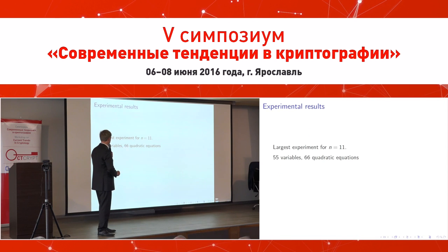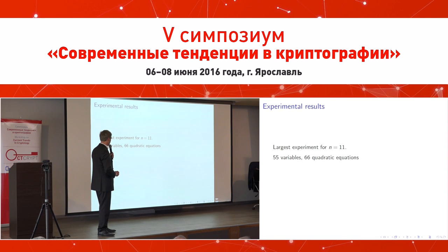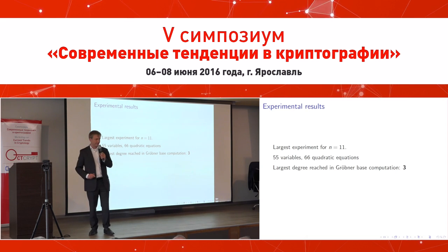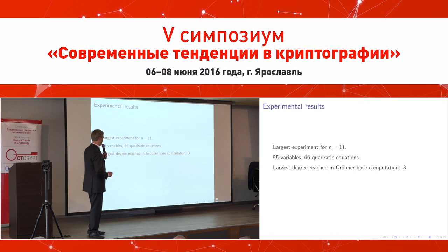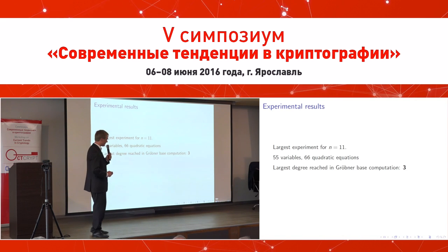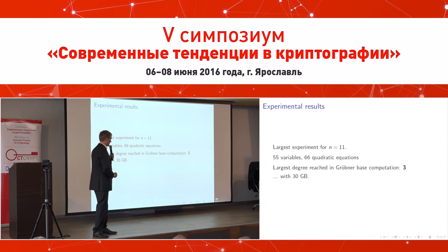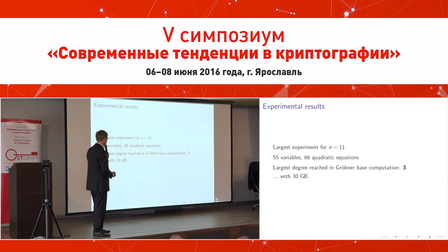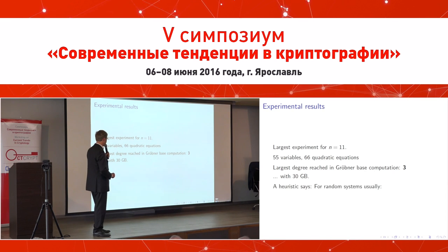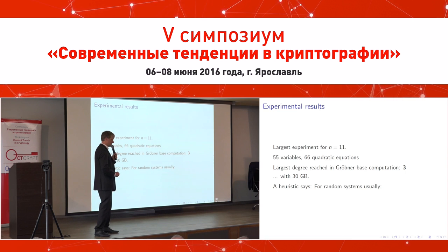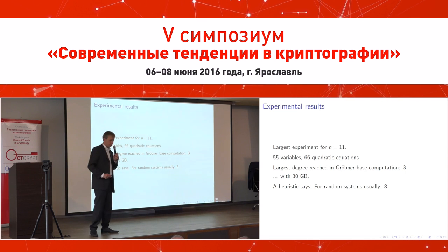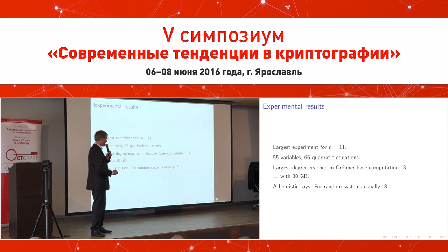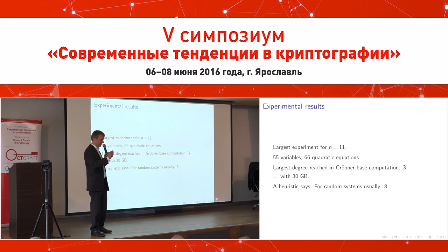I ran experiments. The largest experiment I could do was for n=11, and the largest degree reached was 3 — somehow very impressive. If you believe that 4 is small then 3 is even smaller. I used 30 gigabytes of memory. With semi-regularity one would usually expect to have to go up to degree 8, so something is clearly going on here — that is definitely correct.